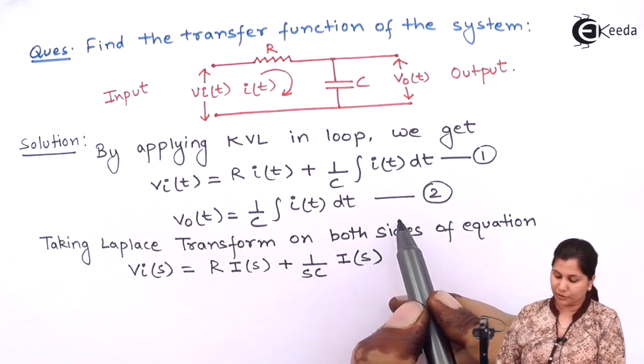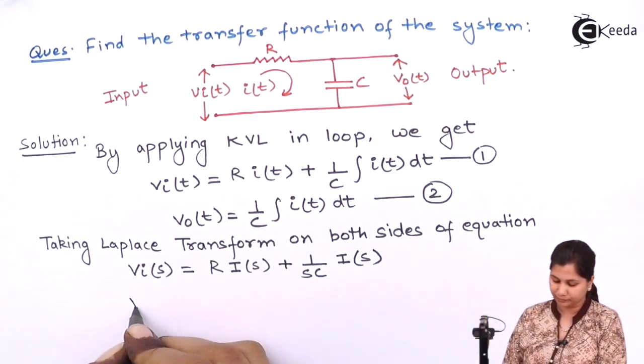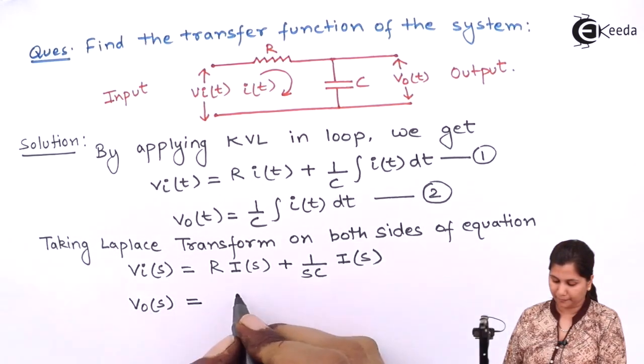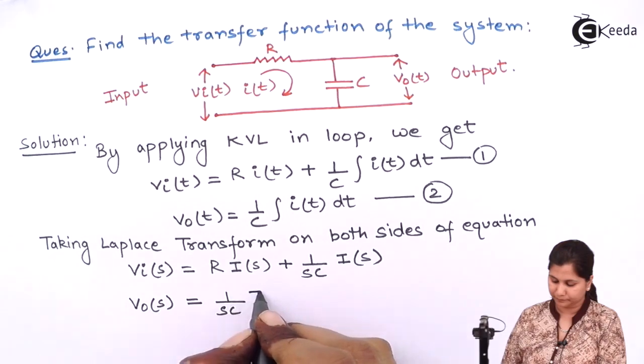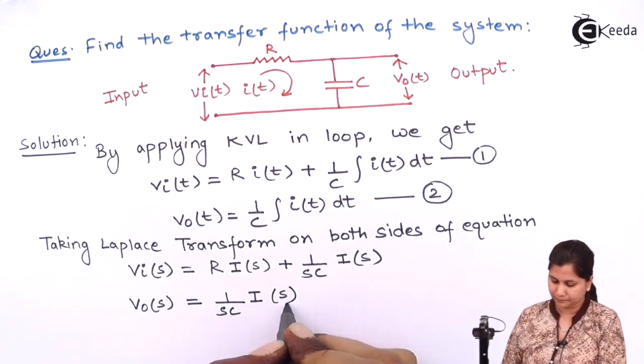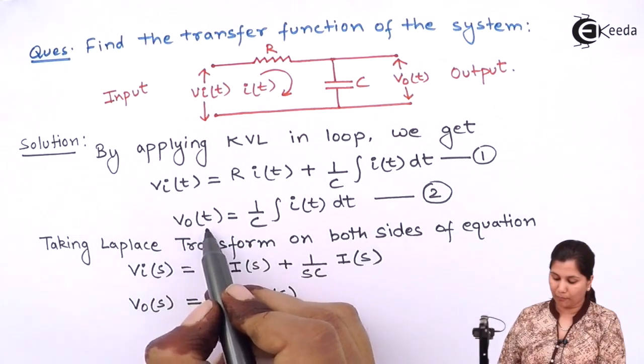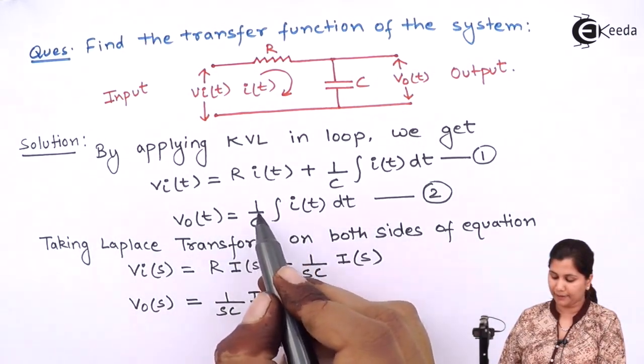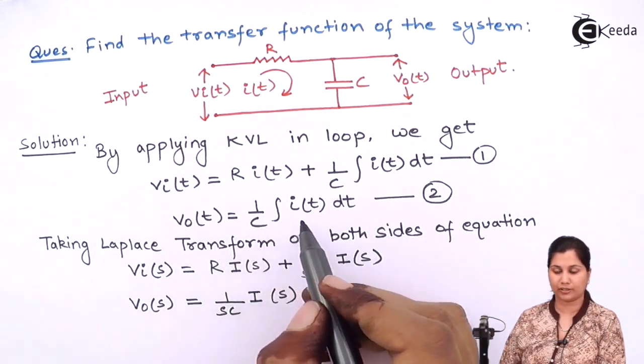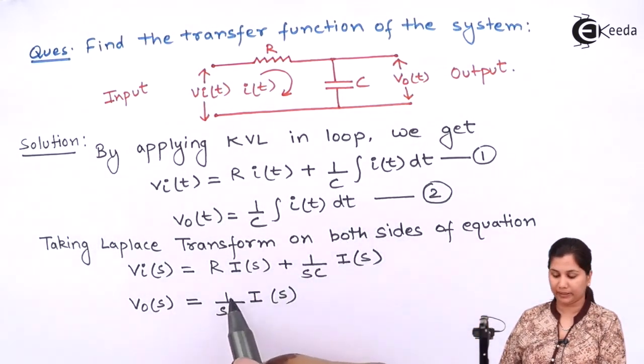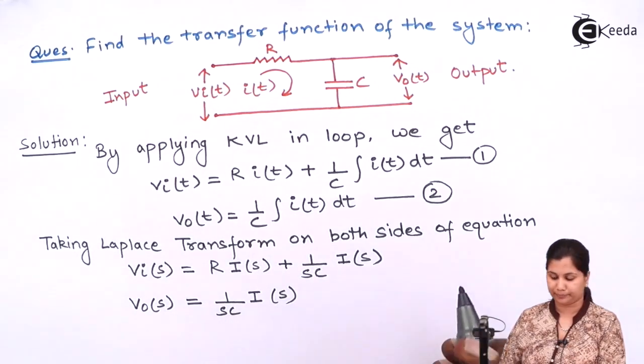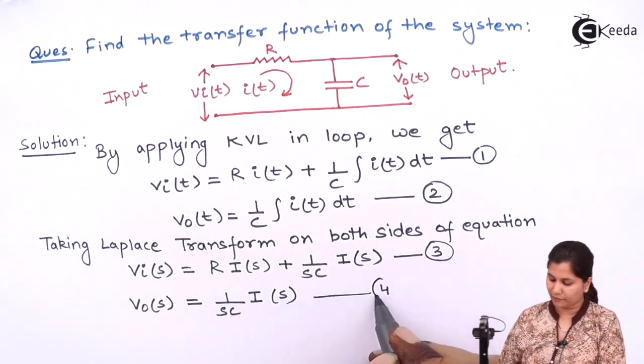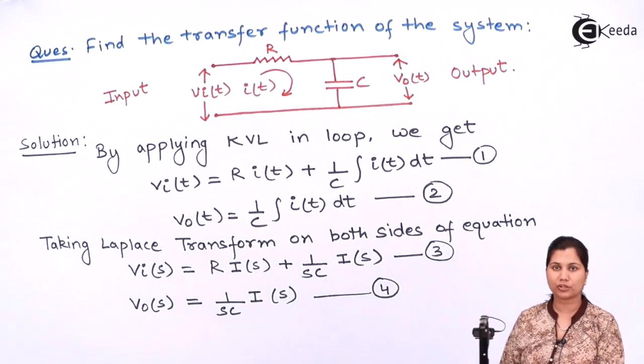Taking Laplace transform of second equation. Laplace transform of V0T will be V0S and Laplace transform of 1 upon C integration IT DT will be 1 upon SC IS. These are the two equations which we have obtained after applying the Laplace transform.